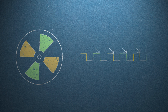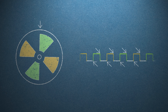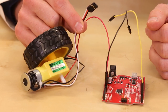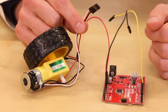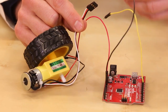If we wanted even better resolution, we could count both rising and falling edges. Then each edge means the disc has turned 45 degrees, and it takes eight edges to make up one revolution. For this demo, I'm not going to power the motor — I just want to show how to read counts from the encoder.